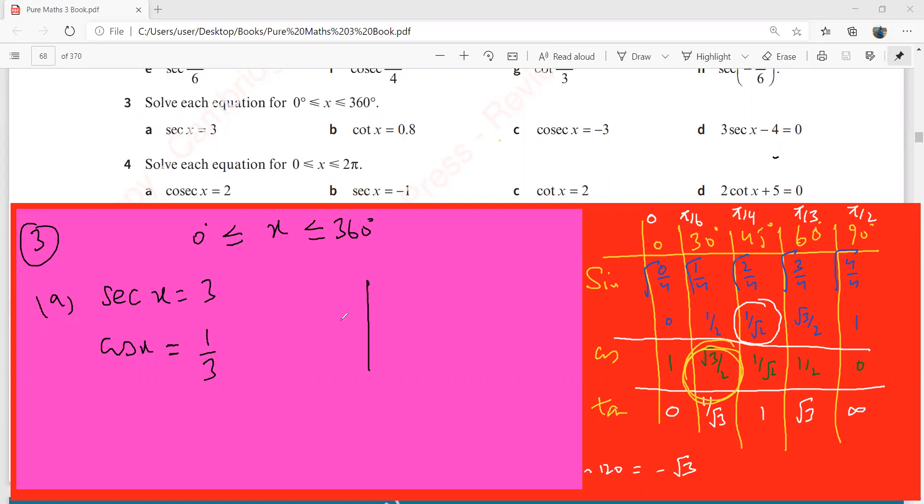We have cos x equal to 1 over 3. We have a positive cos value. Cos is positive in these two quadrants. Please use your calculator, keeping your mode in degrees. What is cos inverse of 1 over 3?